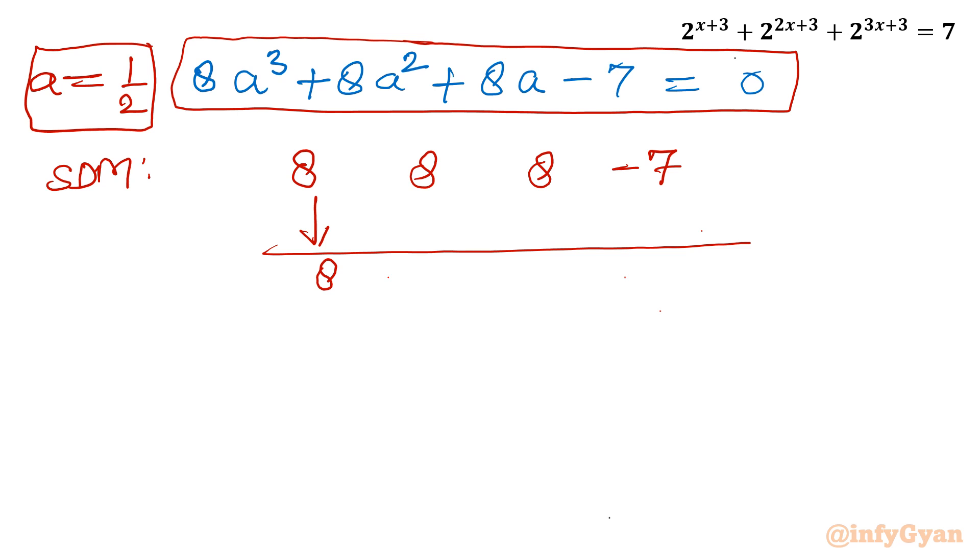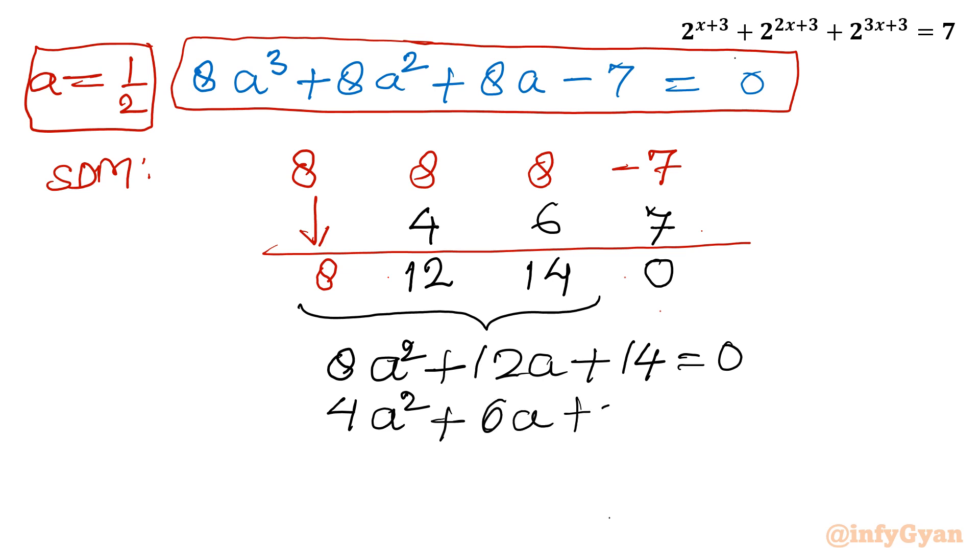Now multiply, take the product, and we have to write the product here. So 8·(1/2) = 4, it will be 12. (1/2)·12 = 6, it will be 14. (1/2)·14 = 7, summation is 0. So these three numbers are coefficients of quadratic equation. So I can write our equation as 8a^2 + 12a + 14 = 0. Equation is divisible by 2, so I will divide immediately: 4a^2 + 6a + 7 = 0.